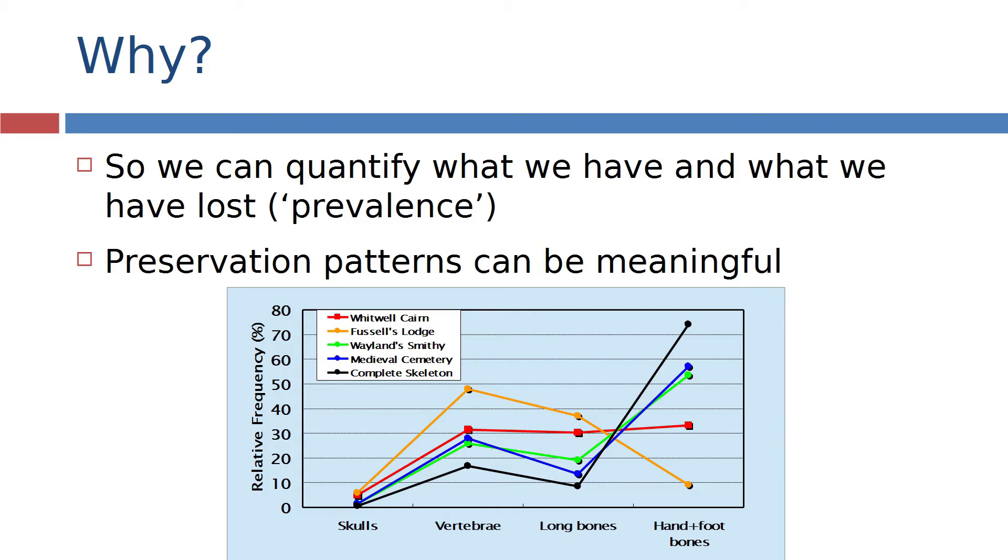So why do we actually want to record this data? Apart from the fundamental archaeological requirement of providing an archive of material, we can actually explore what we have and what we don't have. We quantify what we have so we can see what we don't have and so we can examine potentially what was initially deposited in the first place and one example of where this is particularly useful is again in the British Neolithic where we know that human remains are being manipulated after death.